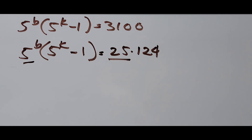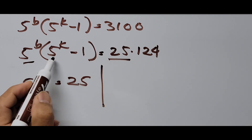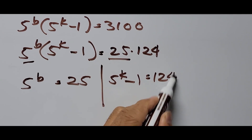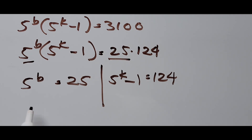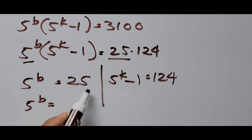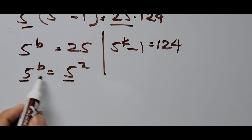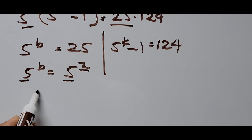Let's start the first solution by equating factor 5^B to 25. The reason I chose 25 instead of 124 is that 25 can be converted to base 5 — that is 5 squared. So 5 raised to B equals 25, which is 5 raised to the second power. Since they now have the same base, the exponents are equal, so B equals 2.